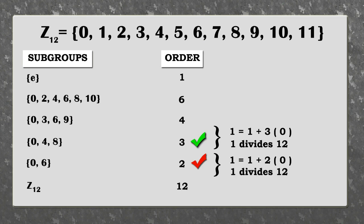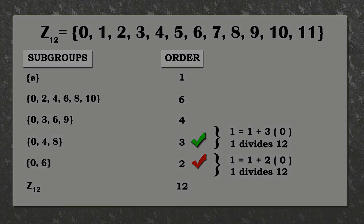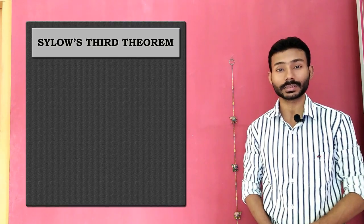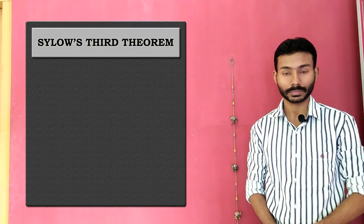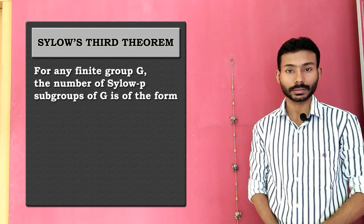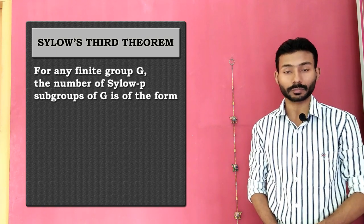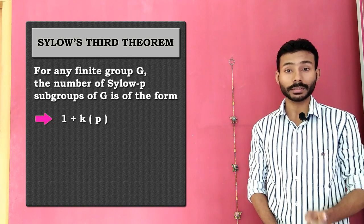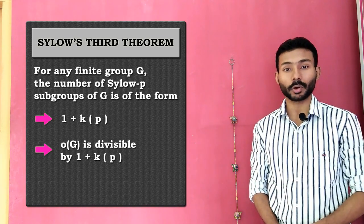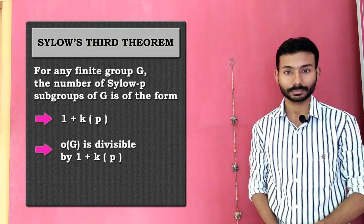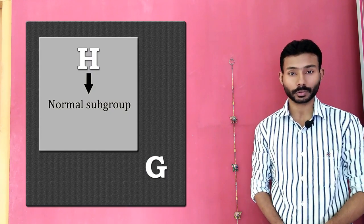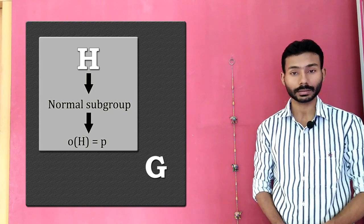And this is exactly what Sylow's Third Theorem is all about. It tells us that for any prime number p, the number of Sylow p-subgroups of a finite group is one plus a multiple of p, and it must divide the order of that group. If a group contains a normal subgroup of any prime order, say p,